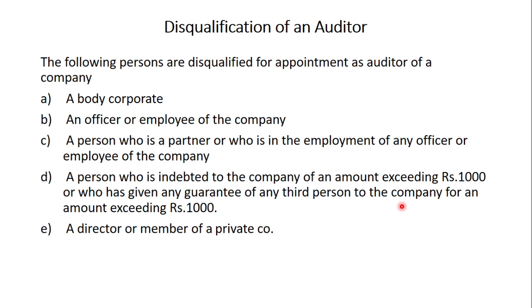Fourth disqualification: a director or a member of a private company cannot be appointed as an auditor of that company. So these are the disqualifications of a company auditor. In today's class we have discussed the meaning of a company auditor, the qualifications, and the disqualifications. We will discuss more about this chapter in the next class. Thank you for listening.